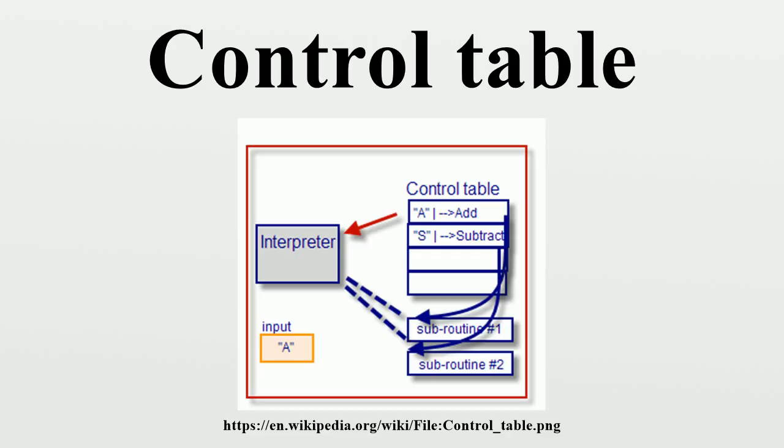A control table may sometimes be a one-dimensional table for directly translating a raw data value to a corresponding subroutine offset, index or pointer using the raw data value either directly as the index to the array or by performing some basic arithmetic on the data beforehand.